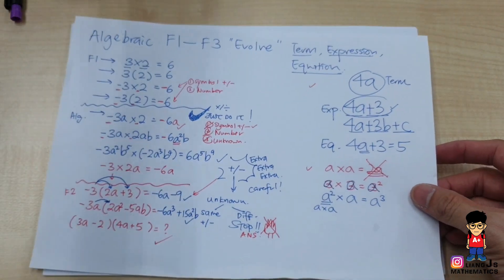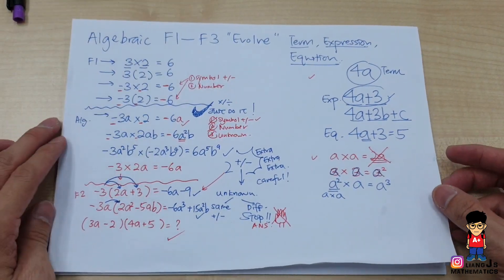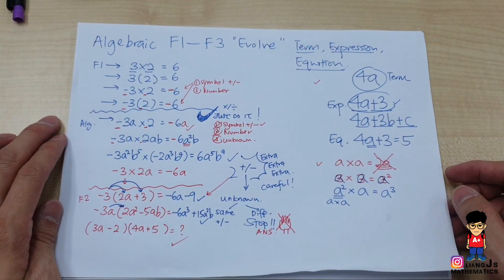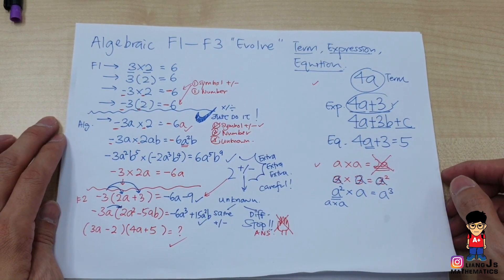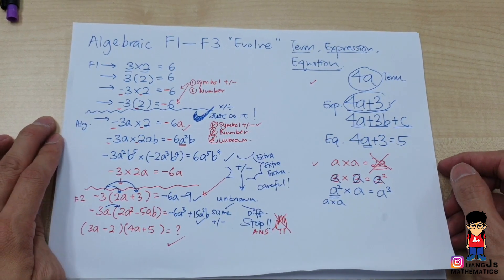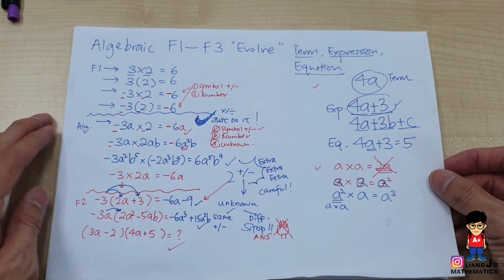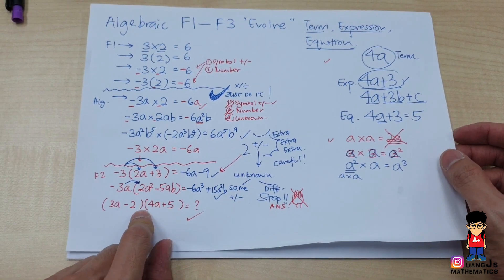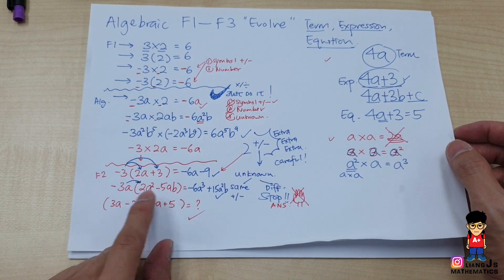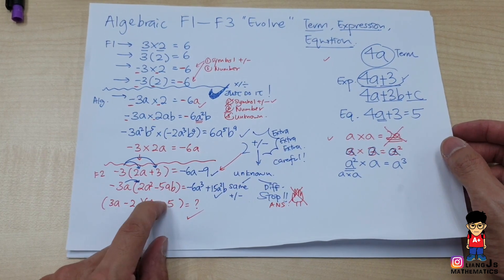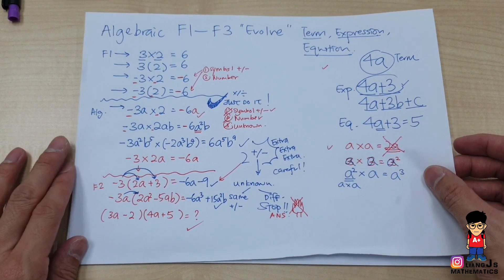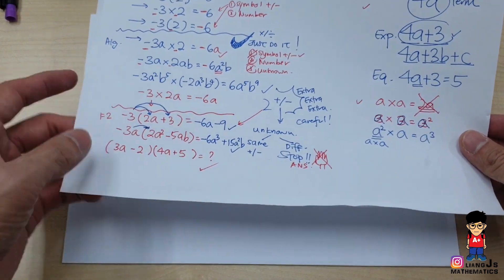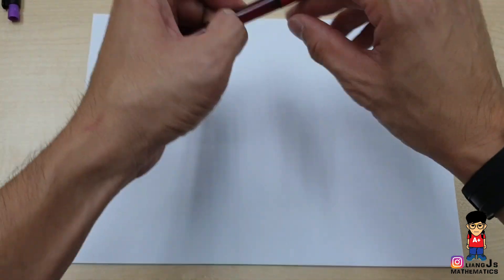Hi, I'm Langgy Mathematics. In the previous video we talked about algebraic expressions involving Form 1 up to Form 3, covering some very basic algebraic ideas. Now I'm going to continue with something more advanced — it involves two brackets, and each bracket has two terms. That's what we're going to talk about today.